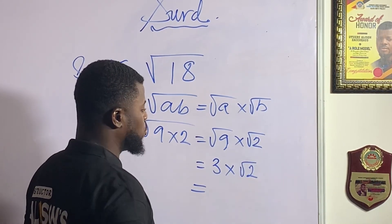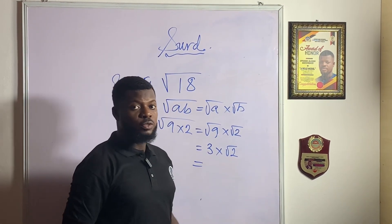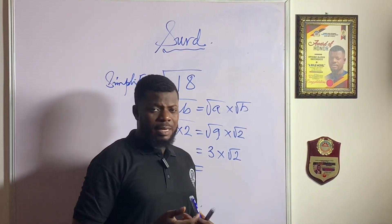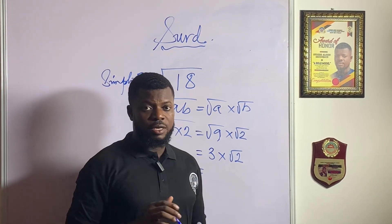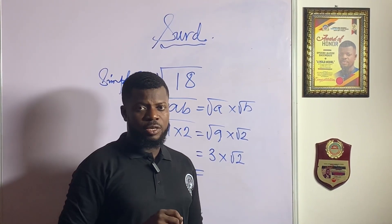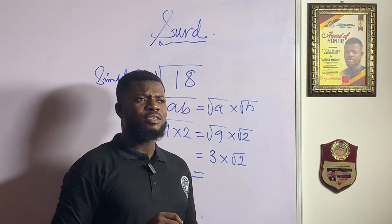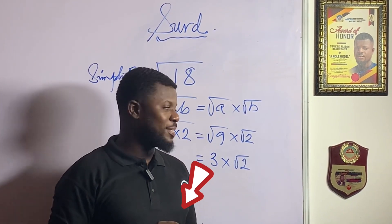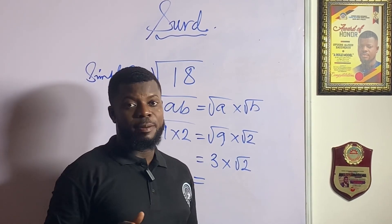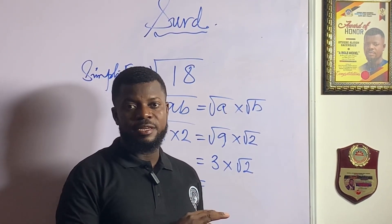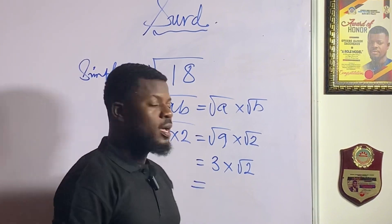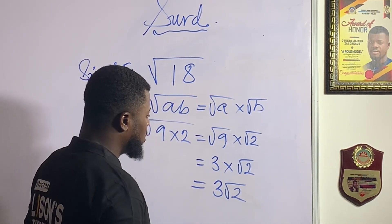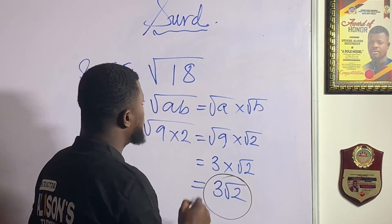So we have 3 times the square root of 2. What happened to the square root of 2? Well, 2 is not a perfect square. Even if you use a calculator to check the square root of 2, it will give you a non-terminating decimal — a repeating number on the screen. That's what we call an irrational number. So we do not need decimal points; we just leave it in root form. Multiply 3 by the square root of 2, and it results in 3 root 2. So 3√2 is the final solution to this problem.